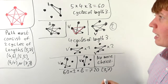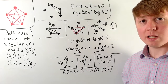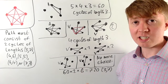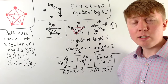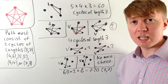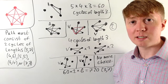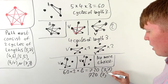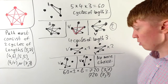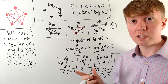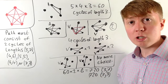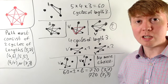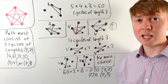We have 720 ways of doing this with a cycle of length three followed by a cycle of length seven. Importantly, every cycle of length seven followed by a cycle of length three corresponds to a cycle of length three followed by a cycle of length seven — you can simply swap the order. So there are also 720 ways of doing this with a cycle of length seven followed by a cycle of length three, giving us 1440 ways total so far.